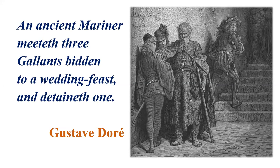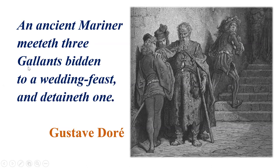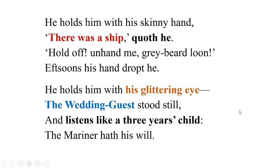This is the gloss — G-L-O-S-S — the notes provided by Coleridge. When the poem was first published, Coleridge was accused of giving a poem people could not understand, so in his own edition he provided gloss so anyone could understand. The gloss reads: 'An ancient Mariner meeteth three gallants bidden to a wedding feast and detaineth one.' There are also many paintings by the French artist Gustave Doré included.